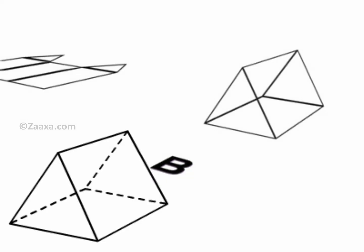In order to find the net of a solid, always note the number of faces the solid has and the shape of the faces carefully first, and then proceed to visualize whether the net can be folded to get the given solid.